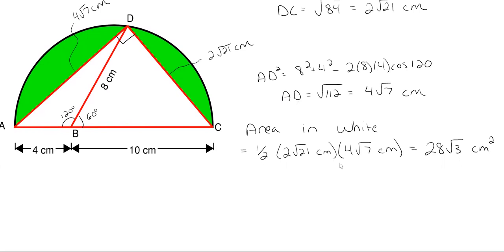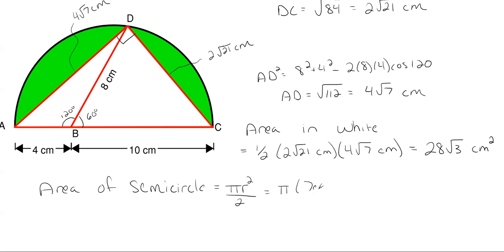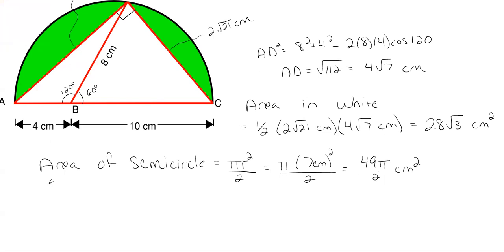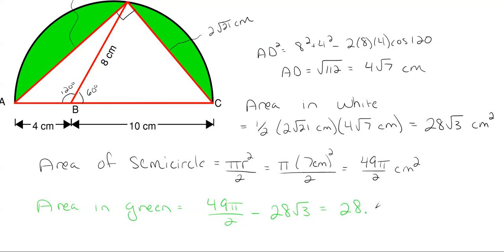The area of the semicircle is π × r² / 2 = π × 7² / 2 = 49π/2 centimeters squared. So the area in green is 49π/2 − 28√3 centimeters squared, which rounded off gives approximately 28.472 centimeters squared.